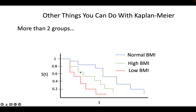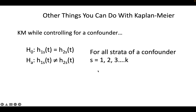With Kaplan-Meier, you can also compare more than two groups — it doesn't just need to be two. You can also do a stratified analysis where the null hypothesis is based on stratum. For example, if smoking is a confounder with two strata (smoking and non-smoking), you're able to compare whether the hazards of the treated and non-treated groups are the same within each stratum, controlling for that confounder.